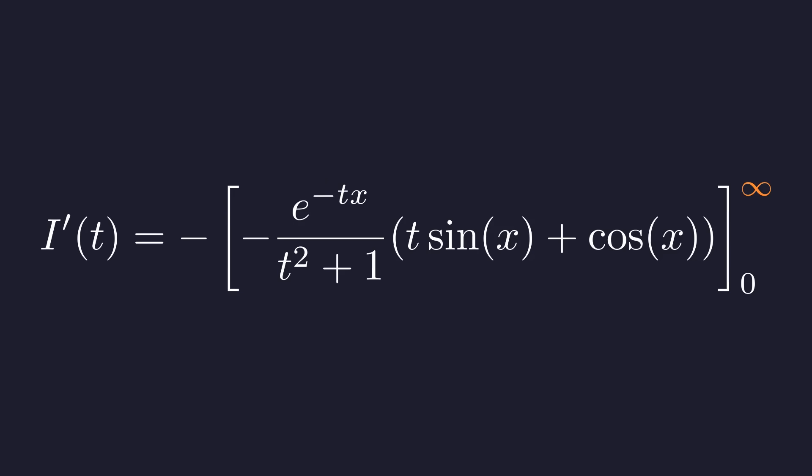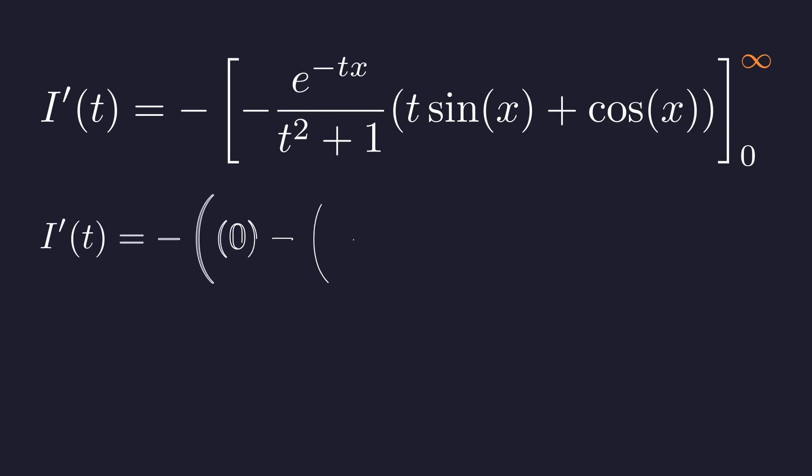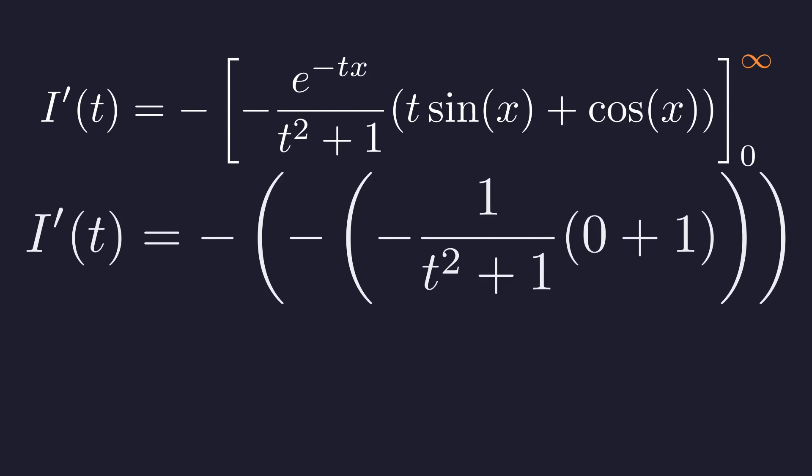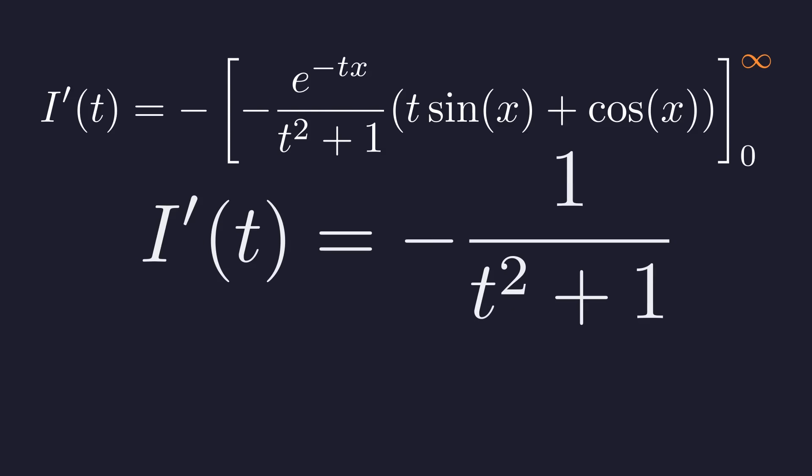sine of 0 is 0, and cosine of 0 is 1. The exponential term becomes e to the 0, which is also 1. So we have 0 for the upper limit minus the value at the lower limit. Plugging in the known values simplifies the expression inside. And after simplifying the signs, we get a beautifully simple result for our derivative. I prime of t equals negative 1 over the quantity t squared plus 1.